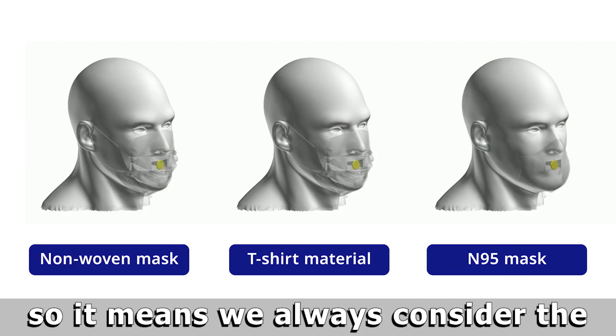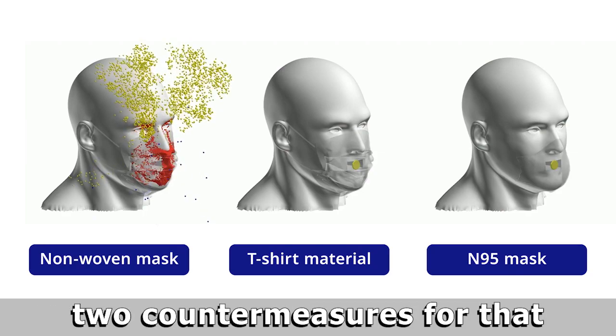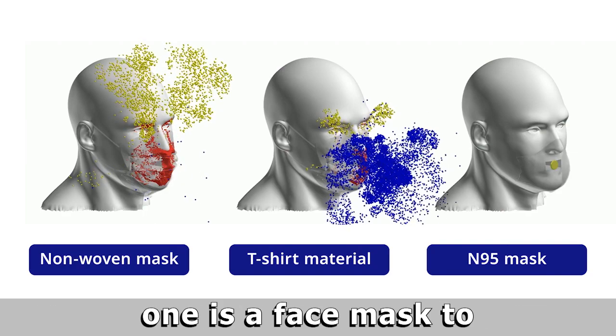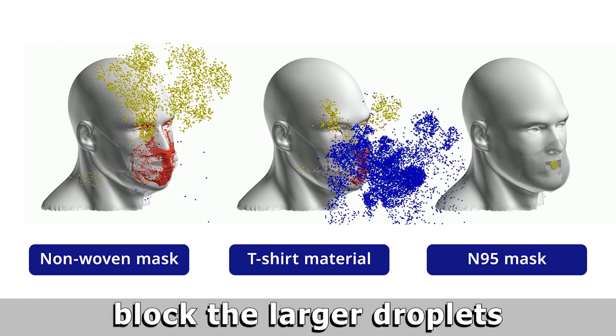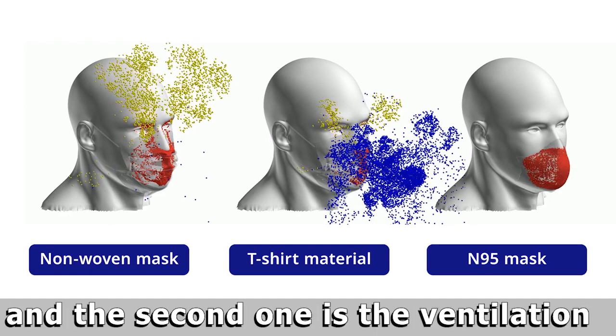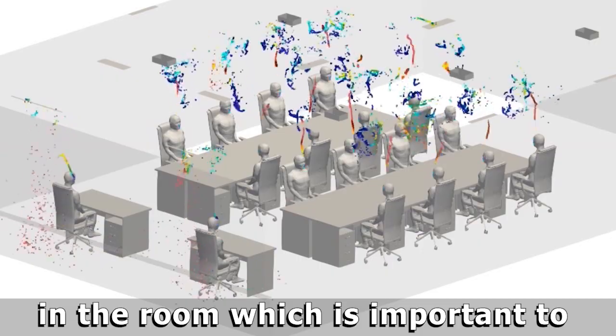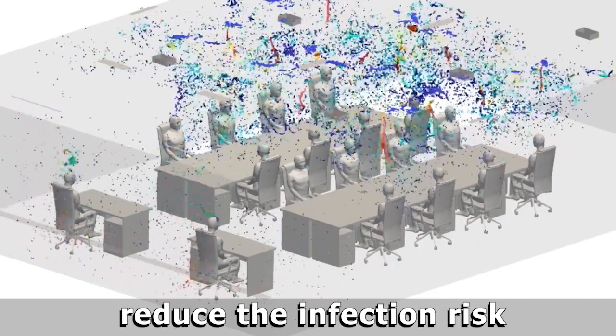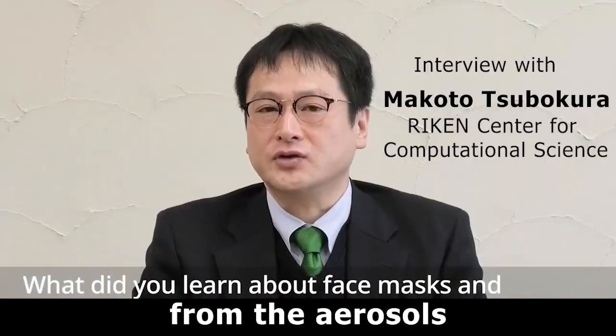The important thing is that we always consider two countermeasures. One is a face mask to block the larger droplets, and the second is ventilation in the room, which is important to reduce the infection risk from aerosols.